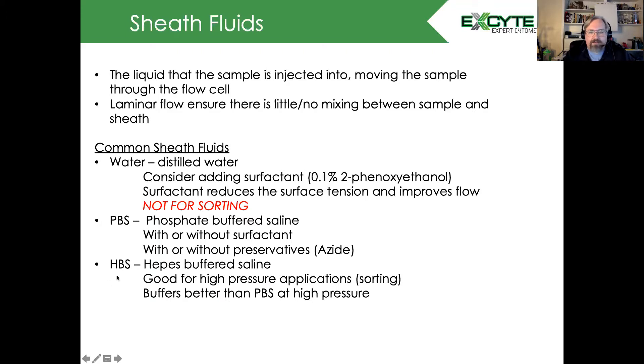For sorting, what I like to use is HBS, or HEPES buffered saline. The reason is because HBS is good for high pressure sorting applications and buffers better than PBS at high temperature. We make this ourselves, so whenever you're making your own sheath, I strongly encourage you to check both the pH and salinity. Here's a typical salinity meter you can buy from any vendor for about $20.